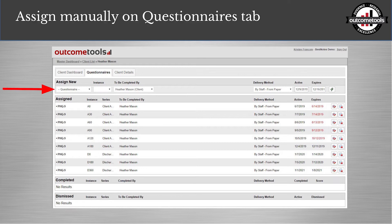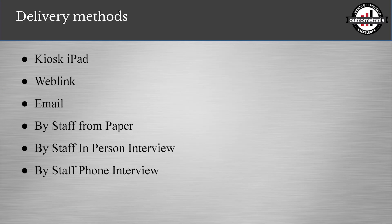If you aren't using a series, you can also manually assign questionnaires. There are some surveys that are more on-demand or as-needed. You can assign those from the questionnaires tab by clicking on the questionnaire dropdown, assigning a timeframe, assigning a delivery method, and then hitting the lightning bolt.